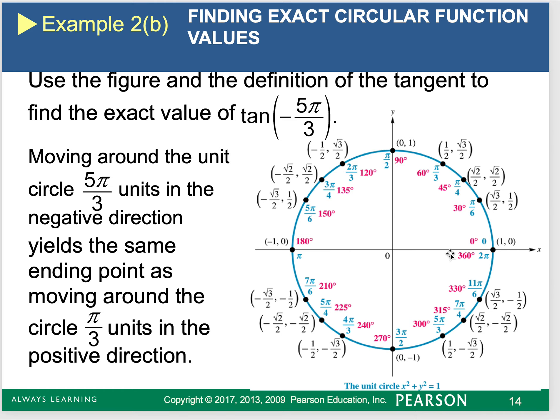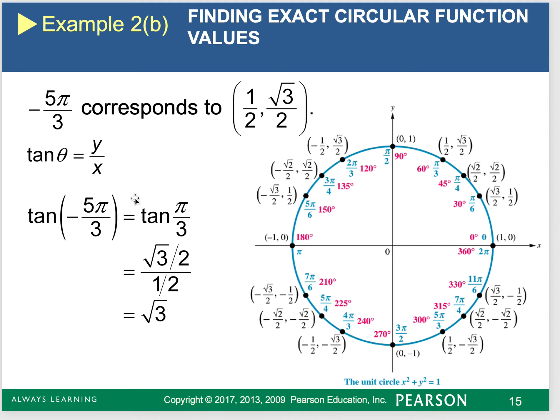Tangent is going to be my y divided by my x. But it's negative, which means I'm moving backwards, which is going to be the same thing as pi over 3. Because here's 5 pi over 3. If I went backwards, it would be related to pi over 3. Here is my x value. Here is my y value. I'm going to need to divide those. So my x divided by my y, and I'm going to get square root of 3.